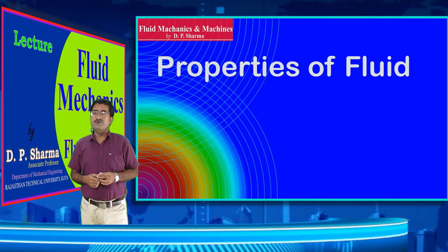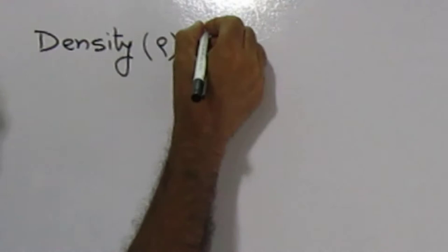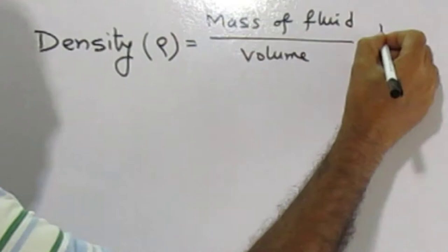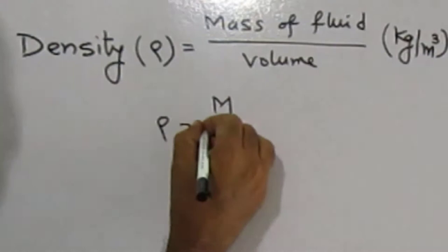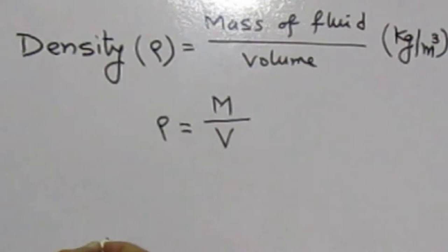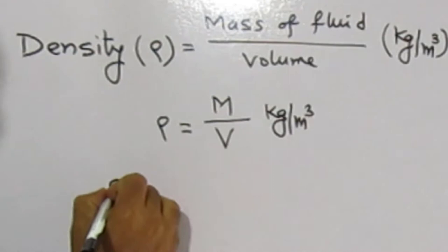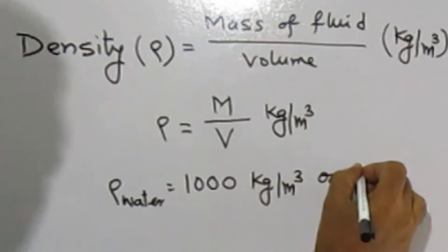Properties of fluid. The first property is density or mass density, denoted by rho. The density of a fluid is defined as the ratio of the mass of fluid to its volume. The SI unit is kg per meter cube. Mathematically, rho equals mass of fluid divided by volume of fluid, m/V. The value of density of water is 1000 kg per meter cube or 1 gram per centimeter cube.